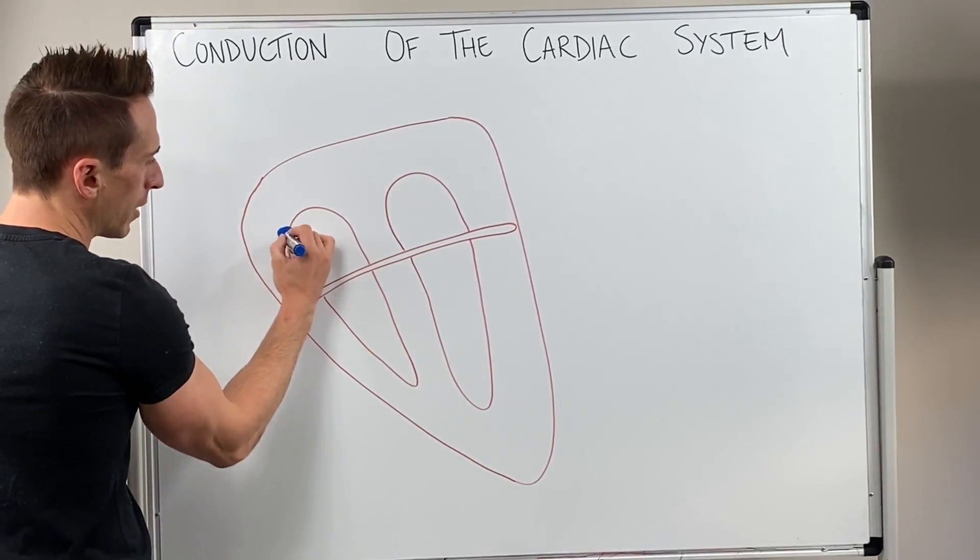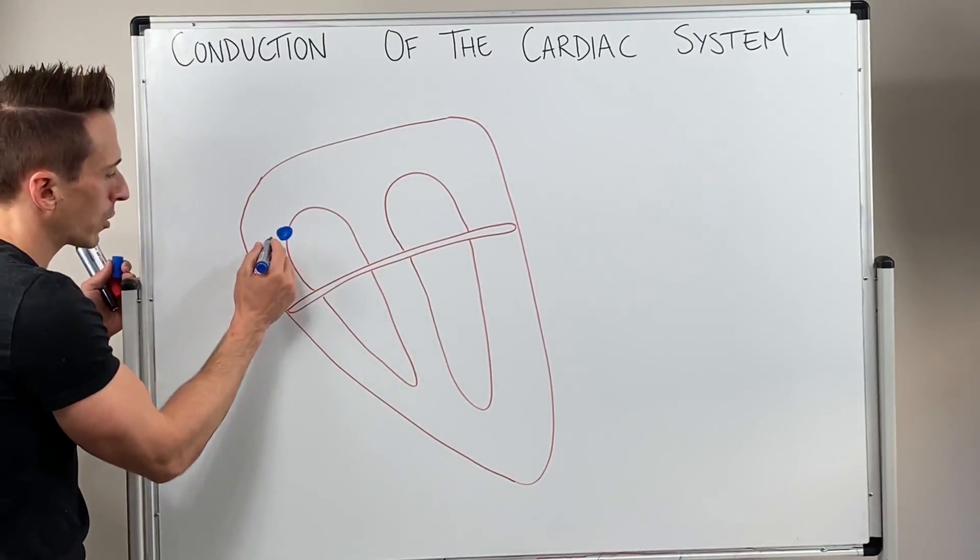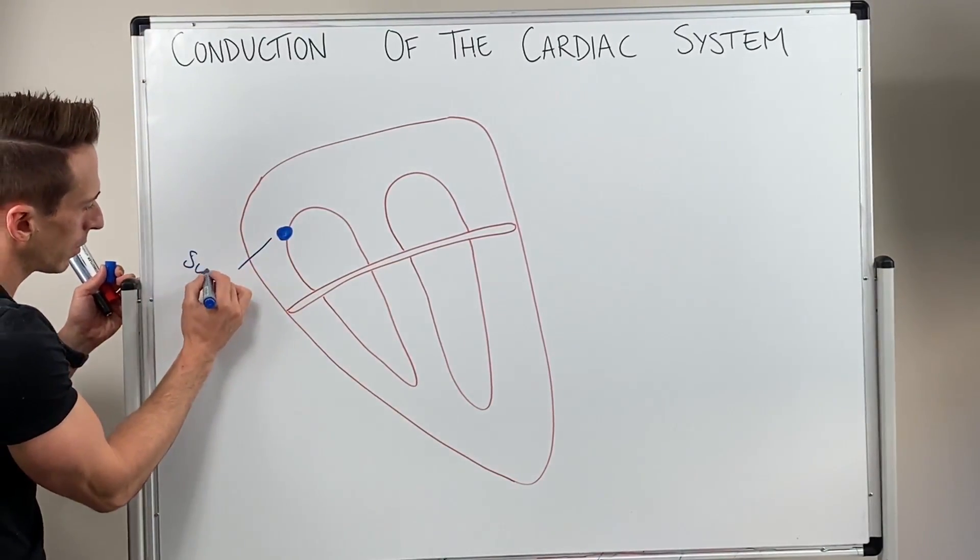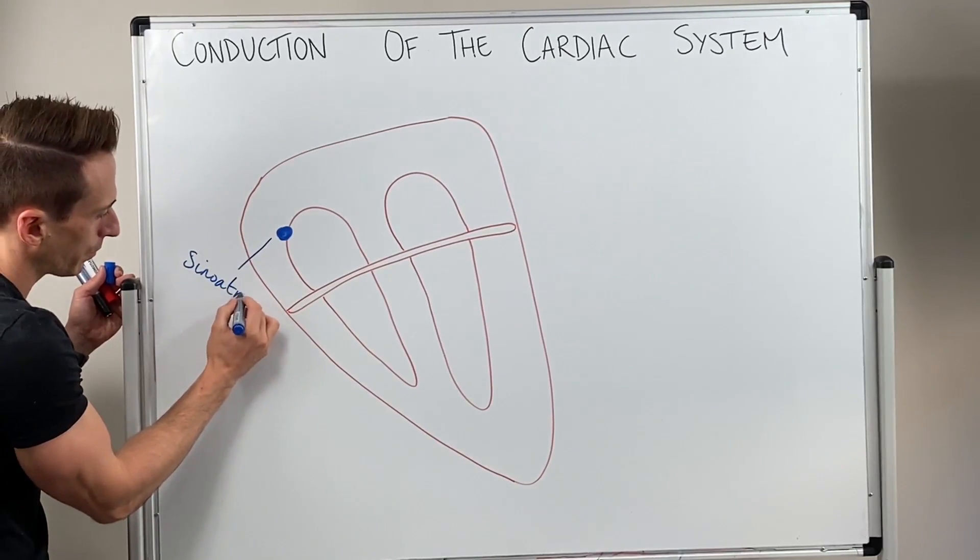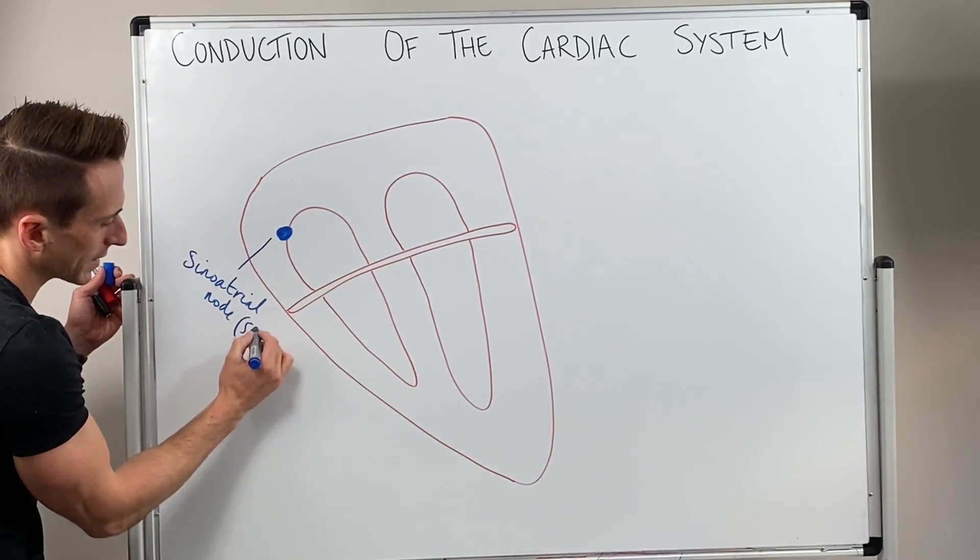This area at the atria is a specialized type of tissue that we call the sino-atrial node, also known as the SA node.